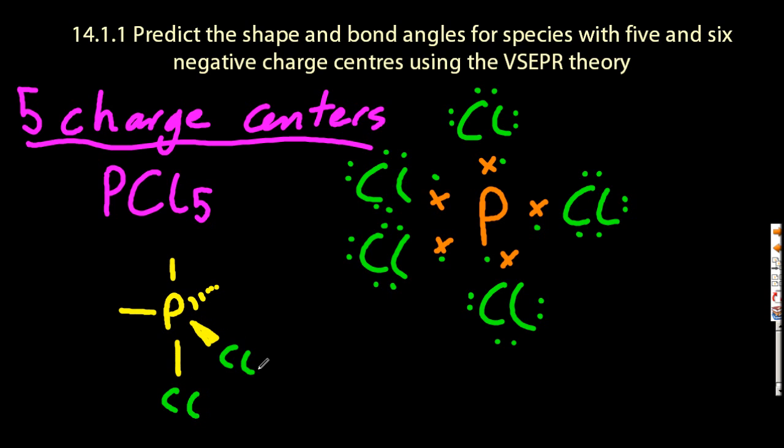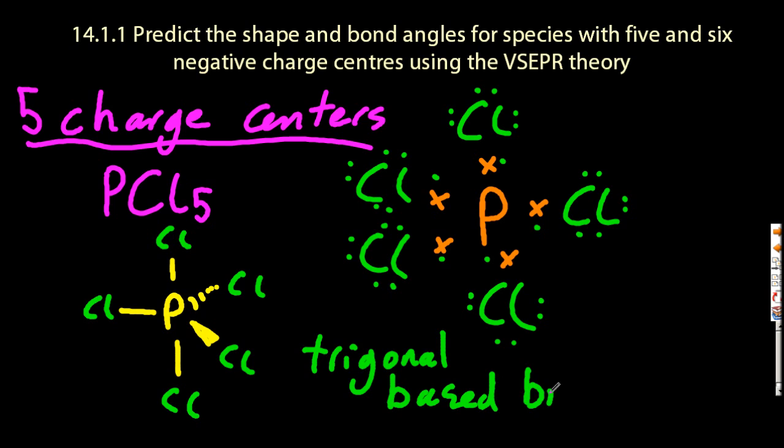One's going back, represented by the dashed line. And one's coming forward out of the plane of the paper, or the screen, represented by a triangle. This is called a trigonal-based bipyramidal structure.